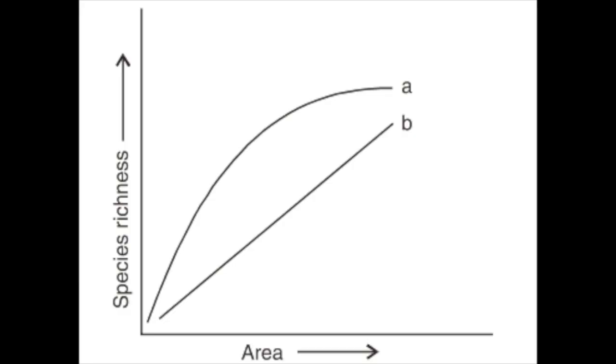Arrhenius described one of the most consistent patterns in ecology. Larger islands contain more species than small islands, and this is true for any area. But why? I'm hungry. My medicine.